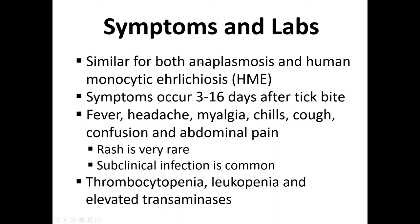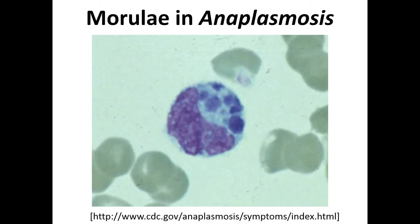Anaplasmosis and ehrlichiosis typically cause fever, headache, muscle aches, chills, cough, confusion, and abdominal pain, starting three to fifteen days after a tick bite. Rash is rare and subclinical or mild infection is common. Low platelets, low white count, and elevated transaminases make this picture more consistent with anaplasma than Lyme. A useful diagnostic approach is to ask the lab whether they see morulae — a blackberry- or raspberry-appearing body within the neutrophils.